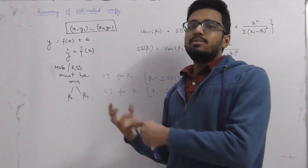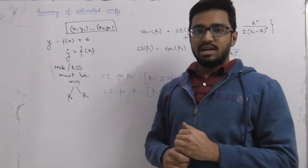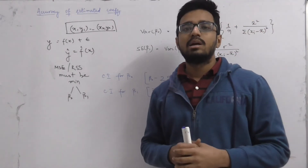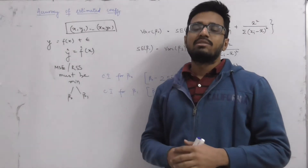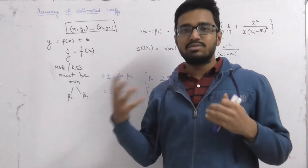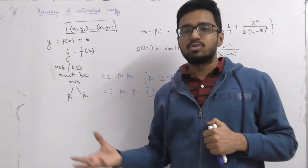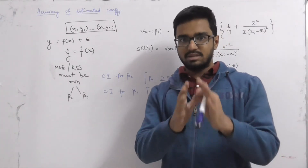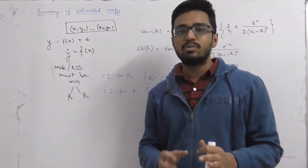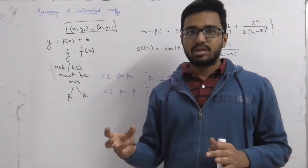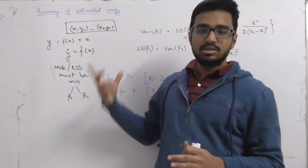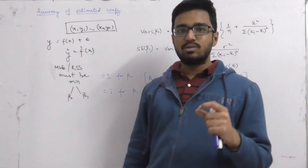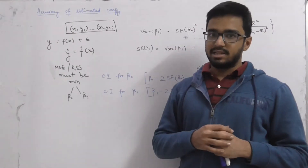Let us try to find the reason behind that. Once we have settled with the reason and have a clear understanding — a better intuition and some theoretical knowledge — we can easily go through the formulas and calculate what we want. We need to be theoretically sound about why we need to study the accuracy of the estimated coefficients.